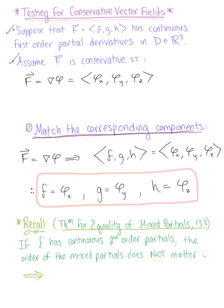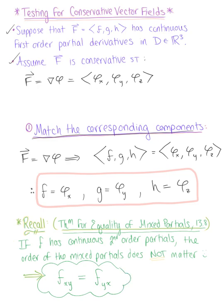To establish this test, recall from section 13.8 that if a function has continuous second-order partials, then the order of the mixed partials doesn't matter. This is saying that the partial derivative with respect to x then y is equivalent to the partial derivative with respect to y then x. We're going to use this theorem to establish equivalence relationships among the three matching components.